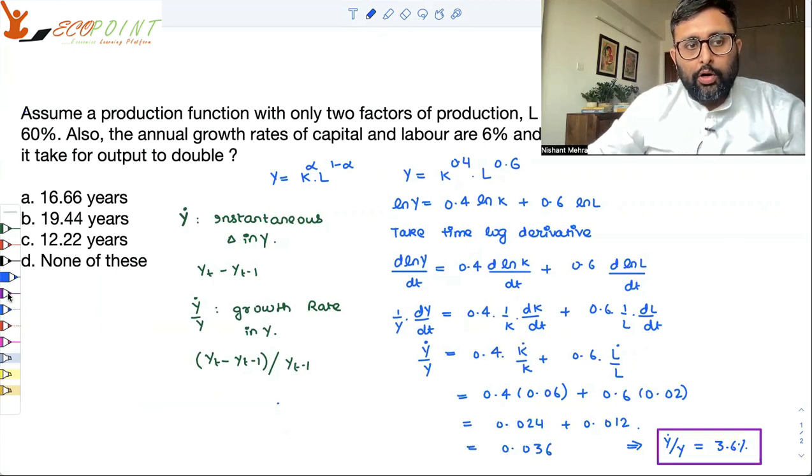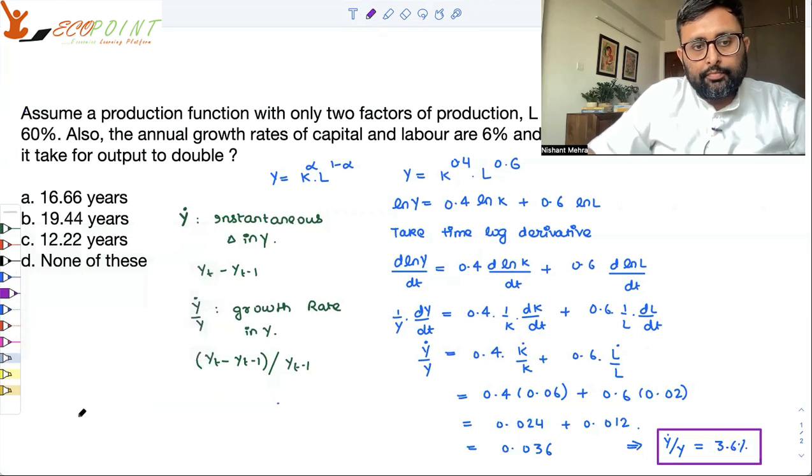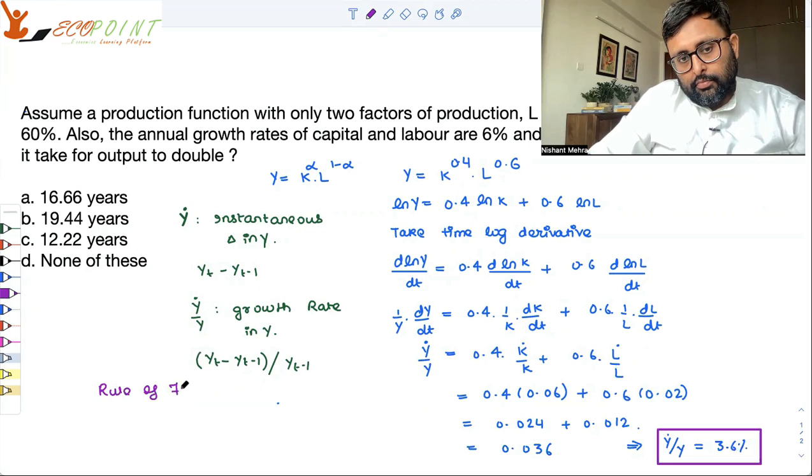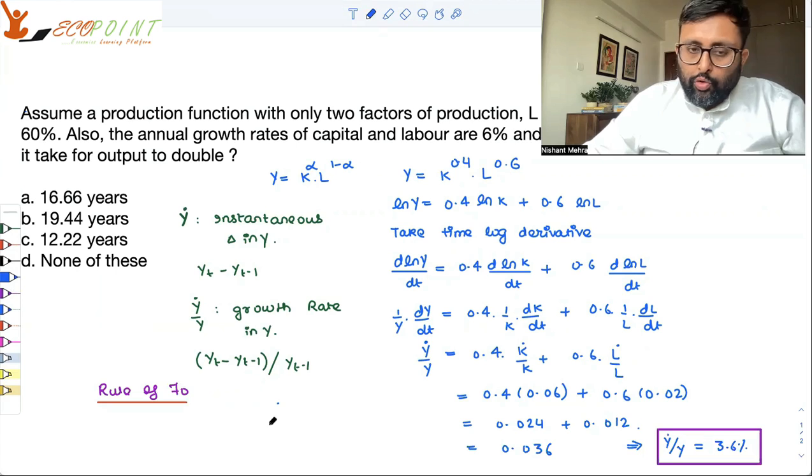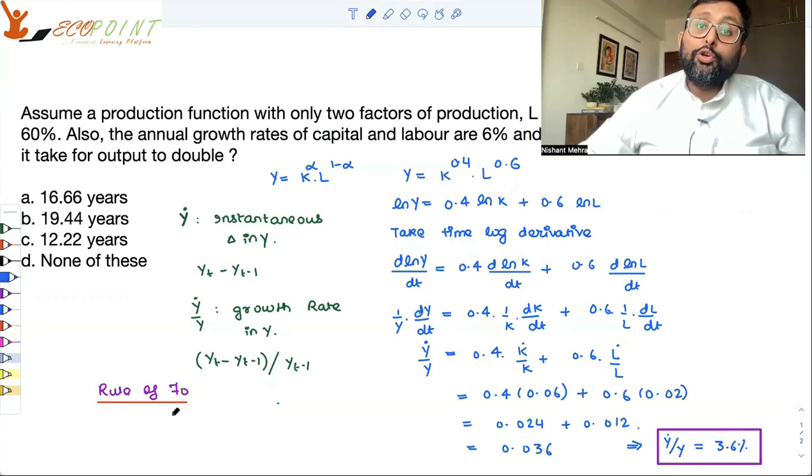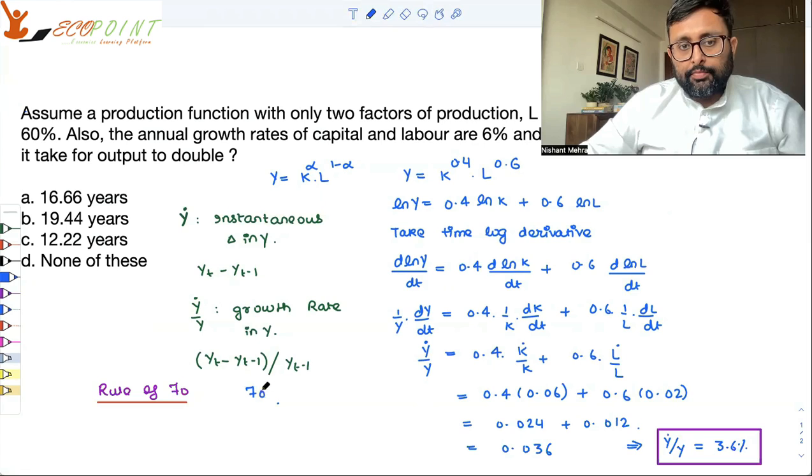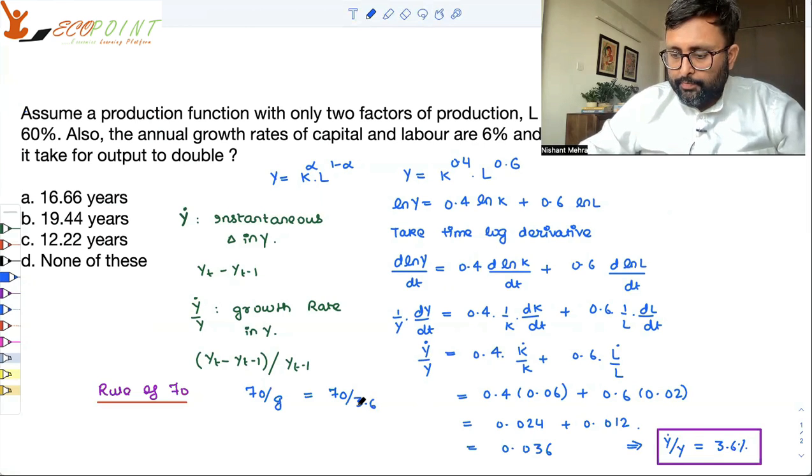Now, what they are asking you is to find out in how many years this output is going to double. There is something which is called rule of 70. So, according to rule of 70, if the output is growing at 3.6% per annum, then output is going to double in 70 by G years. That is 70 upon 3.6. I think that will come out to be 19.44.